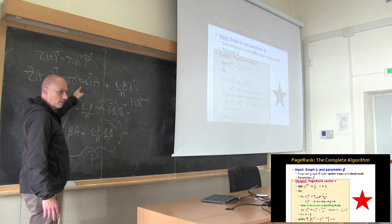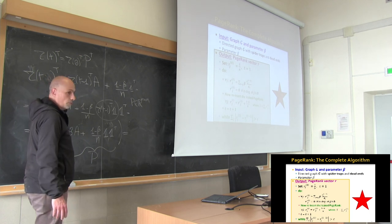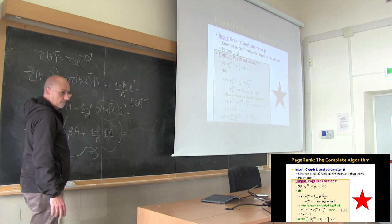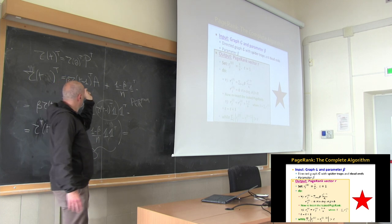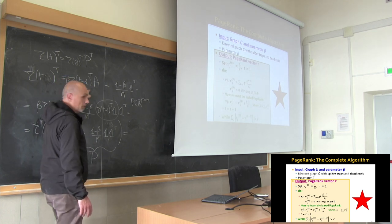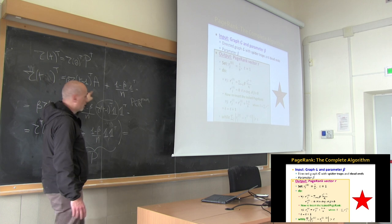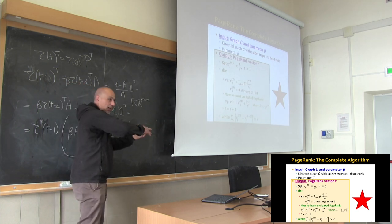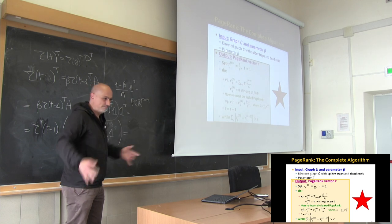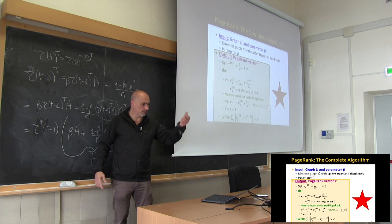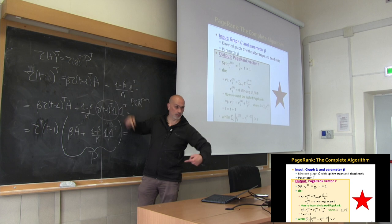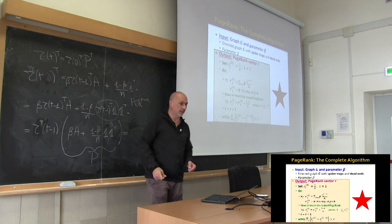Another way to look at this: from the previous page rank vector computed at time t minus one, I retain a fraction beta and use that for the calculation. The fraction (1 minus beta) I remove from here — I give back again spread uniformly. This is page rank leaking: I leak page rank and reintroduce it uniformly in the second step.